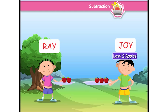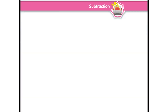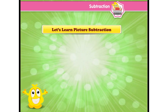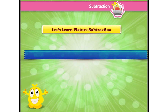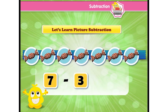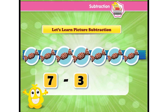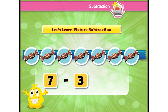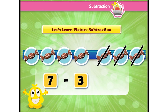There are different ways to do subtraction. Let's see. Let's learn picture subtraction. Here are 7 chocolates. Now, if we have to do 7 minus 3, then it shows we need to subtract 3 out of 7. To do so, cross the 3 chocolates and count the rest.